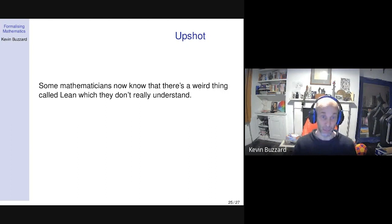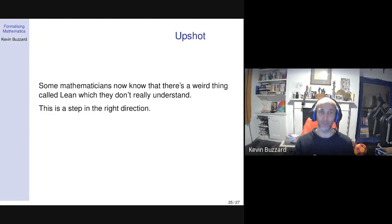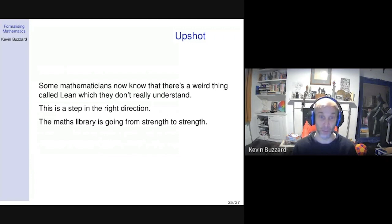The upshot is that some mathematicians now know there's this weird thing called Lean. I put articles in places like the Notices of the AMS — the last but one issue has an article by me explaining to mathematicians what this software does. So we're getting there. This thing is beginning to appear on the horizon of some mathematicians, and some younger mathematicians are getting involved, which is really exciting.